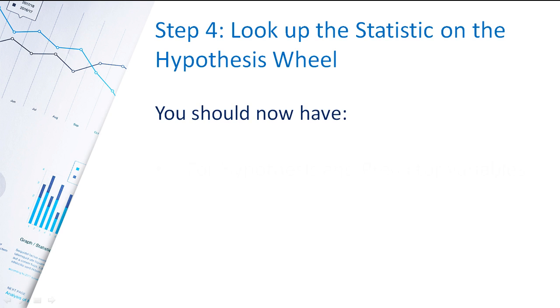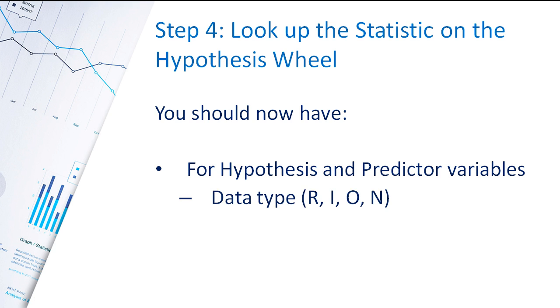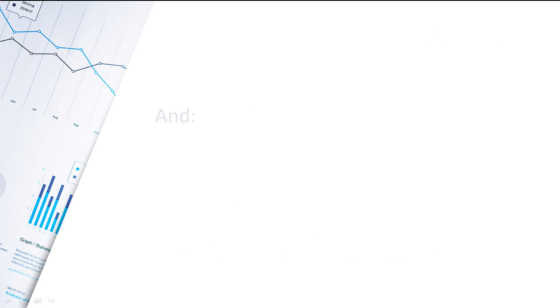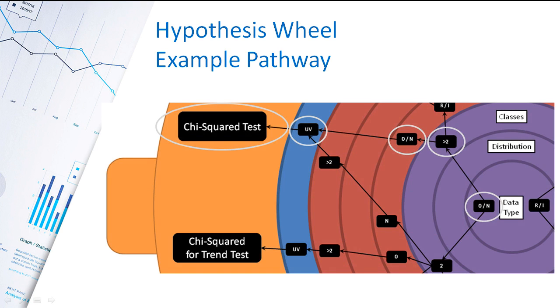Okay, so by now, what you should have for your hypothesis and predictive variables, you should have the data type for each of these two variables. You should know what it is. You should know what your distribution is and the number of classes. And you should also know the particular relationship type that you've got, the analysis type, whether it's univariate or multivariate. And from there, we can go to the hypothesis wheel and we can check out which particular hypothesis test we're going to use. So, let's go through an example here.